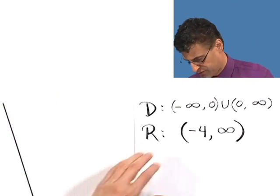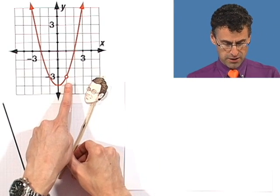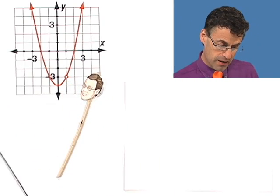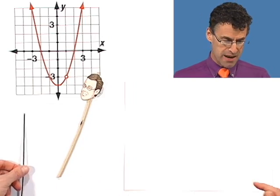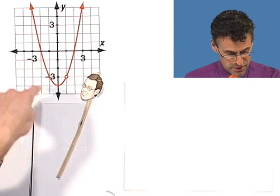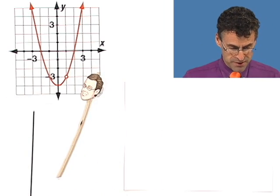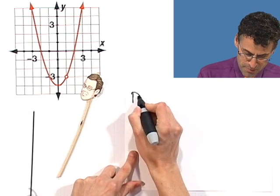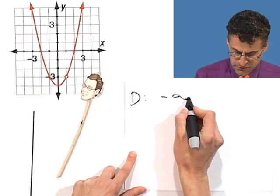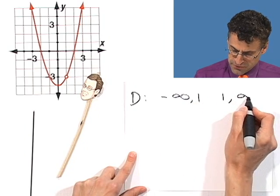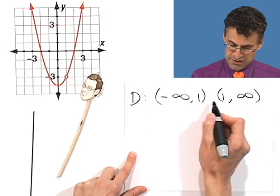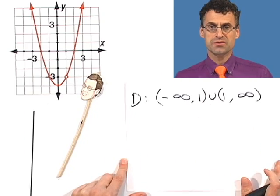Let's try another one. When you look at this graph, you notice there's a hole right here, which happens at x = 1. So the domain: think about squashing everything to the x-axis — there's a hole at 1. The domain goes from negative infinity all the way up to 1, and from 1 to infinity, but you can't touch 1. Taking the union: (-∞, 1) ∪ (1, ∞).